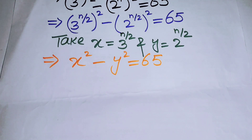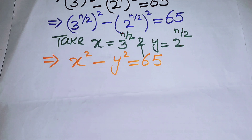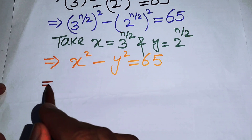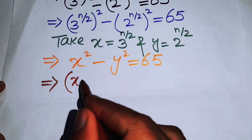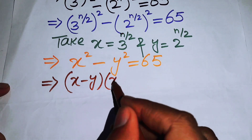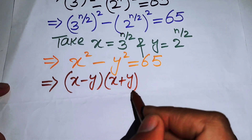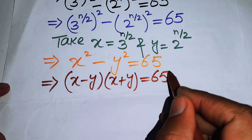You know that x squared minus y squared is a well-known difference of squares identity. This can be written in the form: x minus y, times x plus y, equals 65.